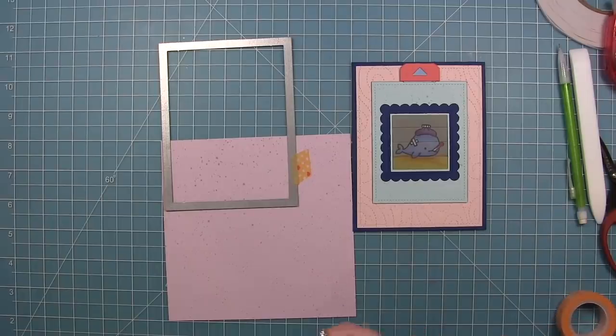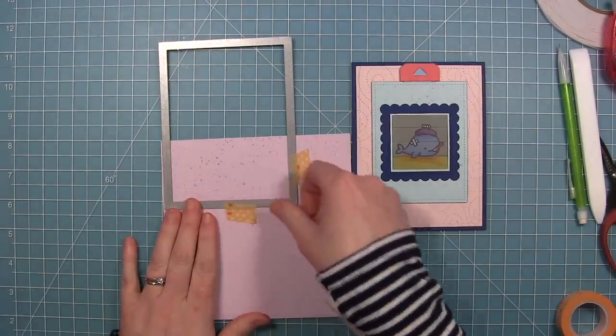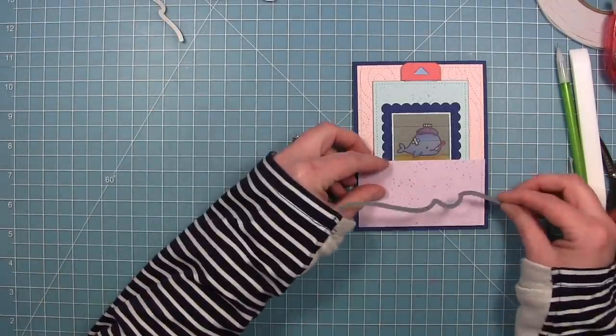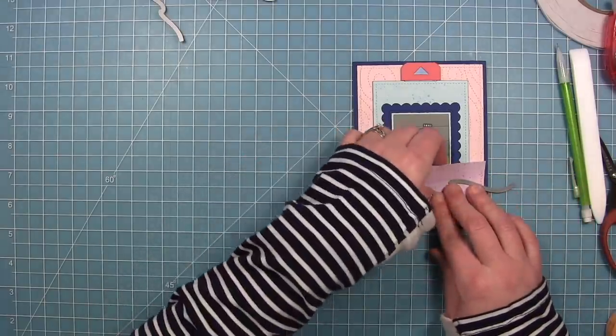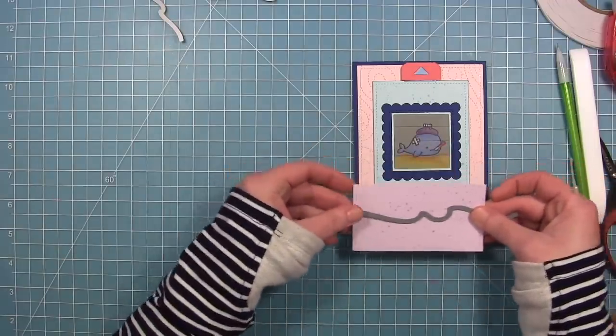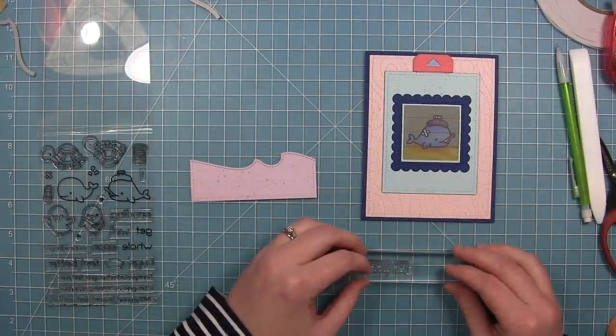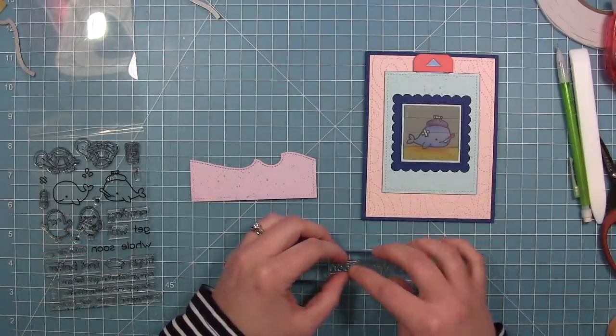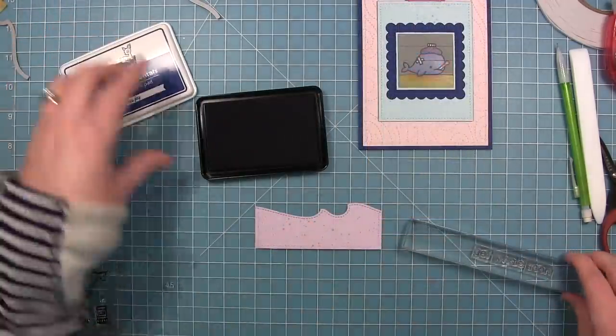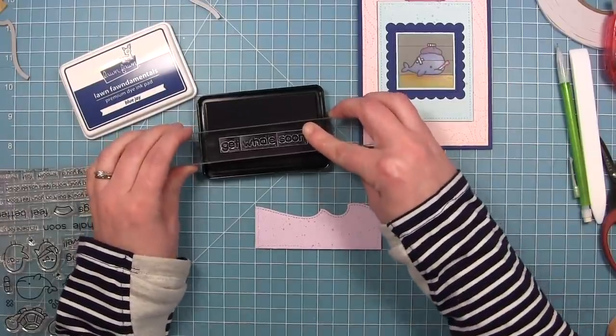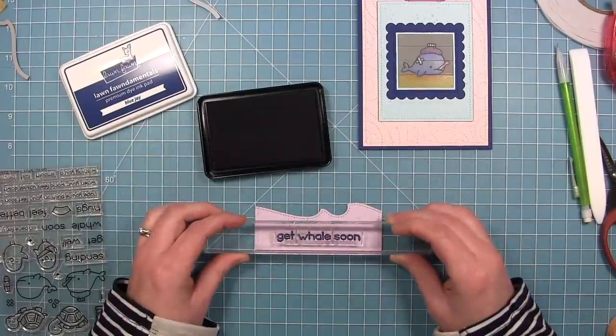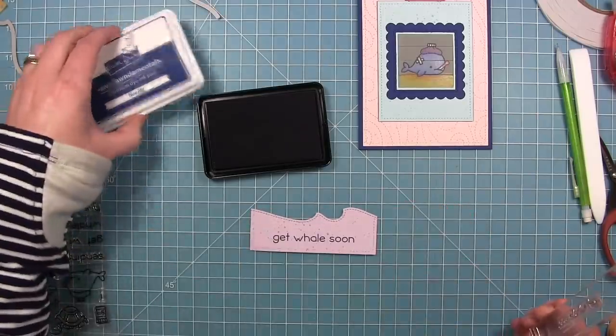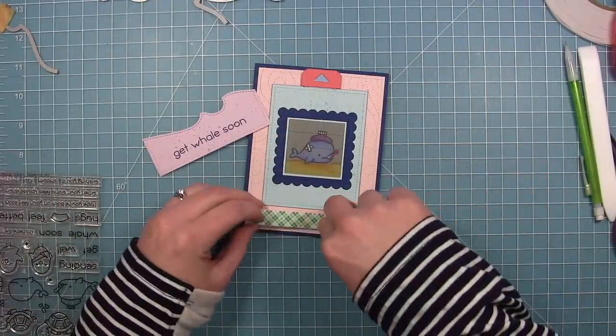So now I have a piece of the purple color from the Spiffy Speckles collection, and I'm just cutting that same large outside in stitch rectangle so that it'll match the same size of that background. And then I'm going to cut the top edge with this stitched wavy border. And I'm just figuring out the placement so that it doesn't cover up my picture. This is where I'm going to put my sentiment. So I'm going to use this sentiment that says get whale soon. I'm just lining those up onto my block. I'm going to stamp it with the Blue Jay ink, again, to tie in that dark blue color that I've got going on here.